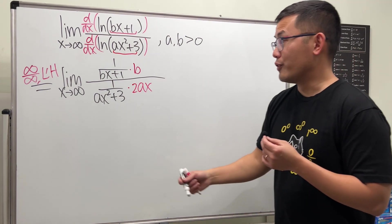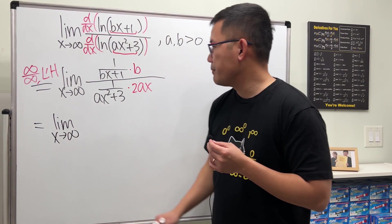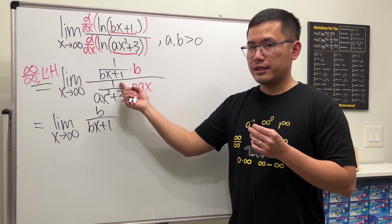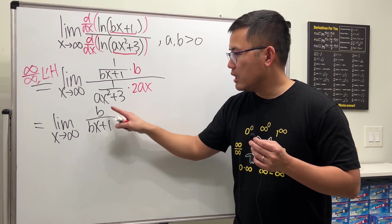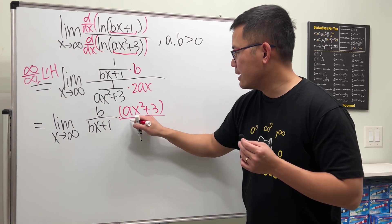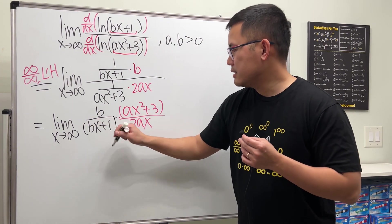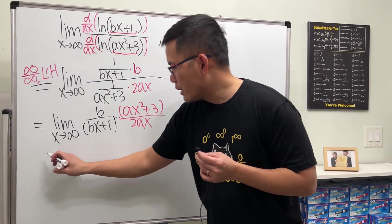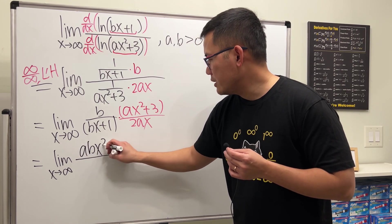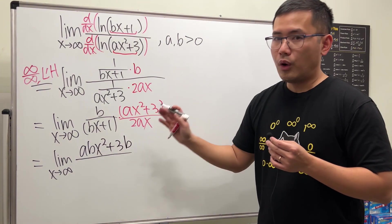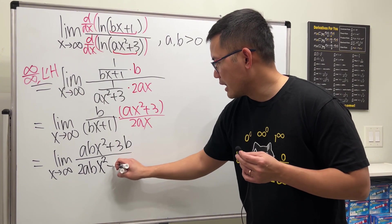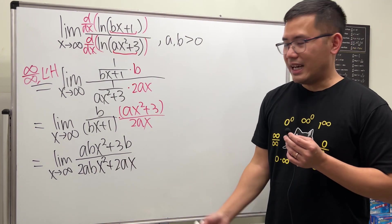Now we simplify. On the top we have b over bx plus one. For the bottom, dividing by a fraction means multiplying by the reciprocal, so it becomes times ax squared plus three, divided by 2ax. Multiplying this out, we get the limit as x approaching infinity of: b times (ax squared plus three) over (bx plus one) times 2ax. Distributing, we get abx squared plus 3b on top, and 2abx squared plus 2ax on the bottom. Now we have a rational function case.